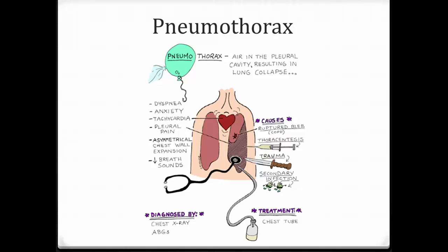Another disorder is pneumothorax, which is basically a collapsed lung. This involves air in the pleural cavity resulting from the destruction of negative pressure in that cavity. Since there's no negative pressure there anymore, nothing keeps the lungs attached to the wall of the thoracic cavity, so their elasticity causes them to recoil and collapse. Causes include a bleb — a little bubble related to COPD that ruptures — thoracentesis, injection of air or fluid into the pleural cavity, stab wounds from trauma, or secondary infections.